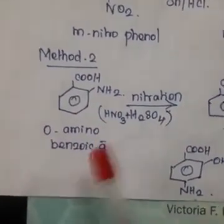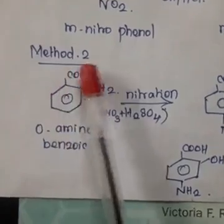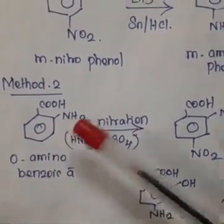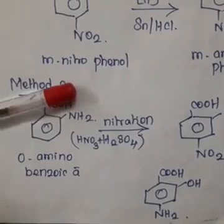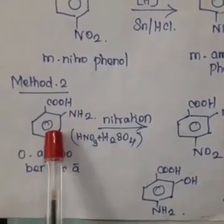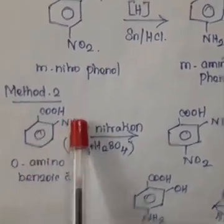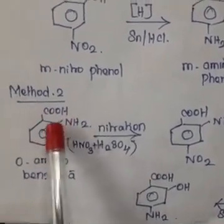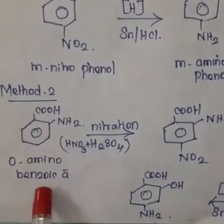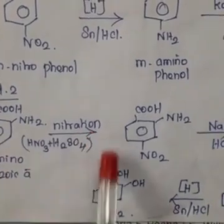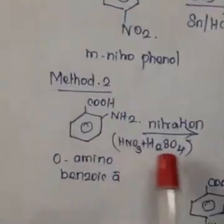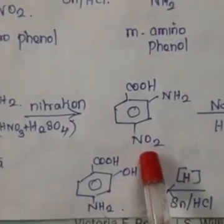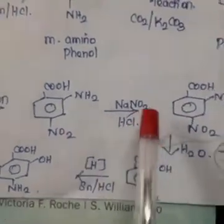In the second method, we start with ortho-amino benzoic acid — benzoic acid with NH2 at the ortho position, also called ortho-carboxy aniline. This undergoes nitration using nitric acid and sulfuric acid as nitrating agents. On nitration, the para position gets nitrated, introducing a nitro group.